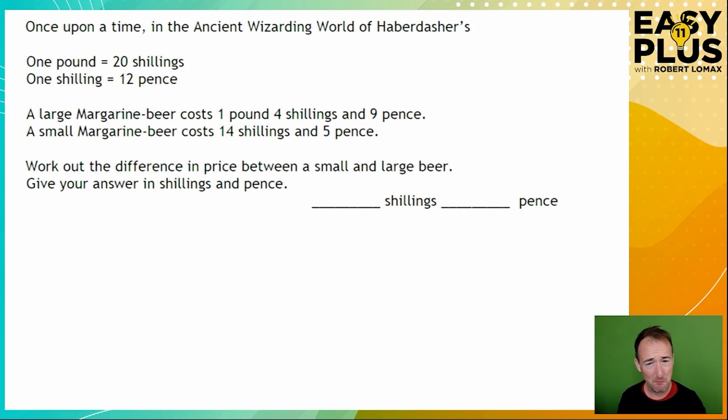We're given some information here about money in the ancient wizarding world of haberdashers otherwise known as Britain before decimalisation. And so in this world 1 pound contains 20 shillings and 1 shilling contains 12 pence. And it might be worth saying that the symbol for shilling is unsurprisingly S and the symbol for pence is D. And these come from Latin for solidus and denarius. We then learn about the prices of large and small margarine beers. Sounds disgusting. And we need to find out the difference in price.